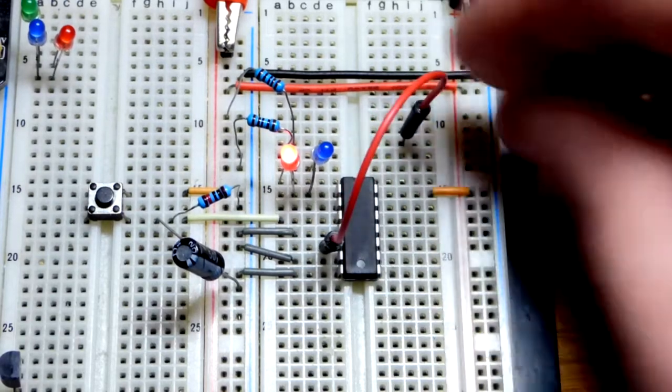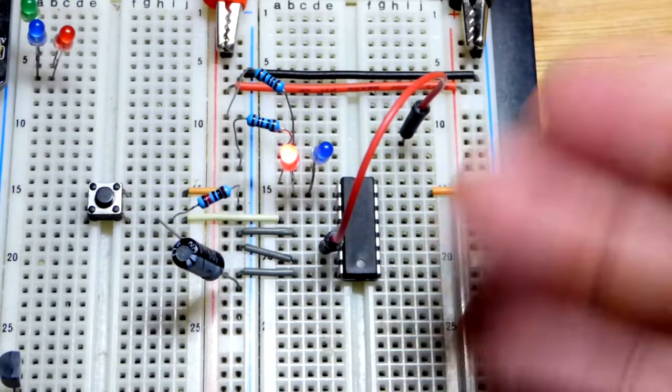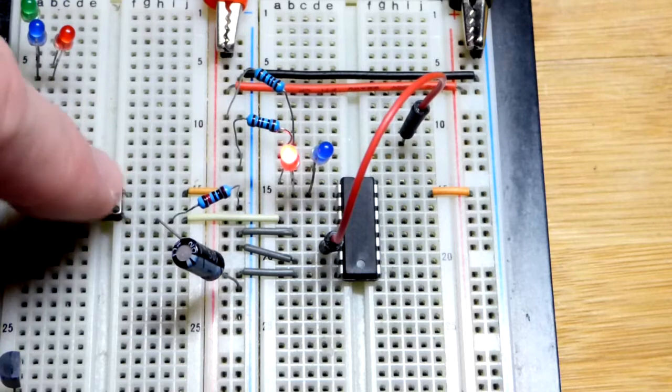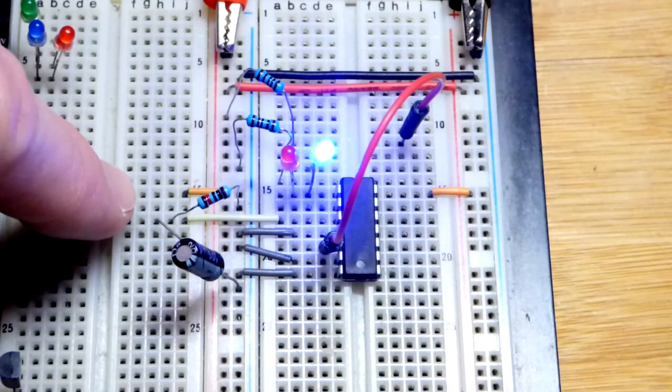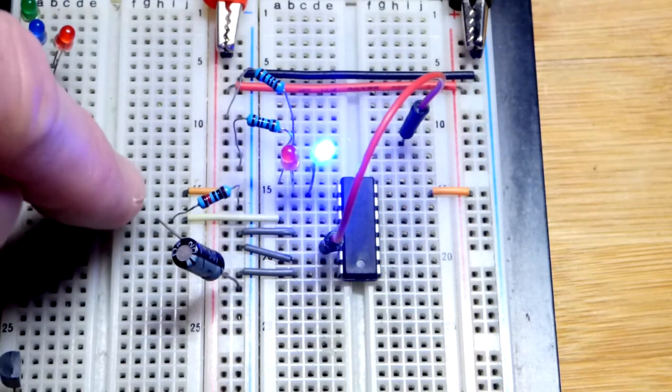If I leave this floating, now it's picking up stray signals in the air, going high and low. But the output won't change until I hit the button.